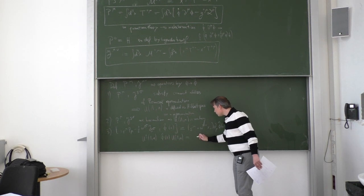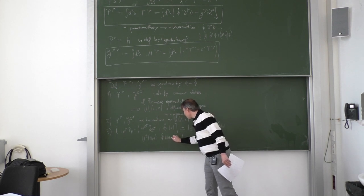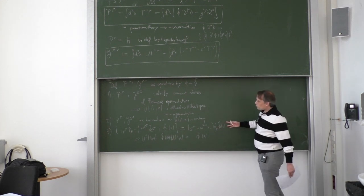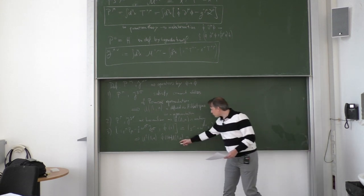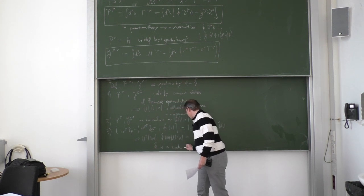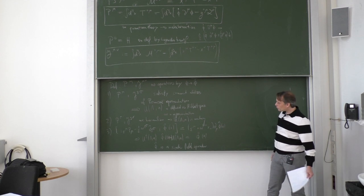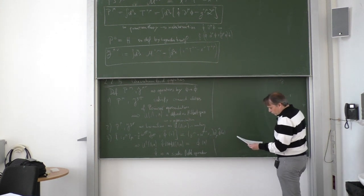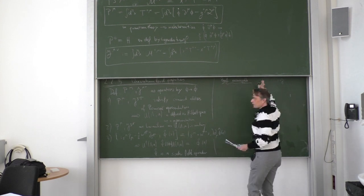The right-hand side shows that by combining infinitesimal transformations to finite quantities, you get that U†(Λ,a) φ̂(x) U(Λ,a) equals φ̂(Λx + a). That means our field operator φ̂ is a scalar field operator, where scalar field operator by definition means this equality. Let me give you a small glimpse of the proof. There are many commutation relations, but let's look at one — the commutator of P_1 with J_{12}.